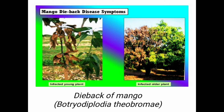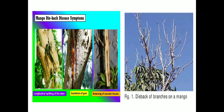After that, complete defoliation of the plant takes place. As you can see in the picture, discoloration of the leaves occurs — the color changes from greenish to brownish. In severe infestation, longitudinal splitting of the stem takes place. If you split the stem, browning symptoms are observed inside the vascular tissue. In severe cases, complete defoliation and drying of all leaves occurs.